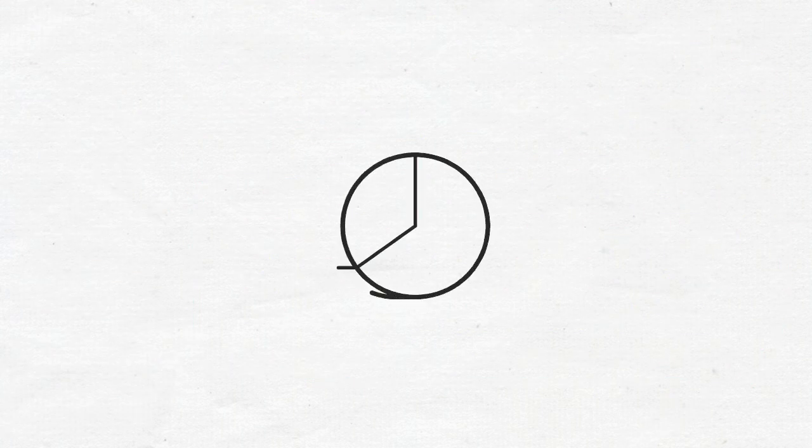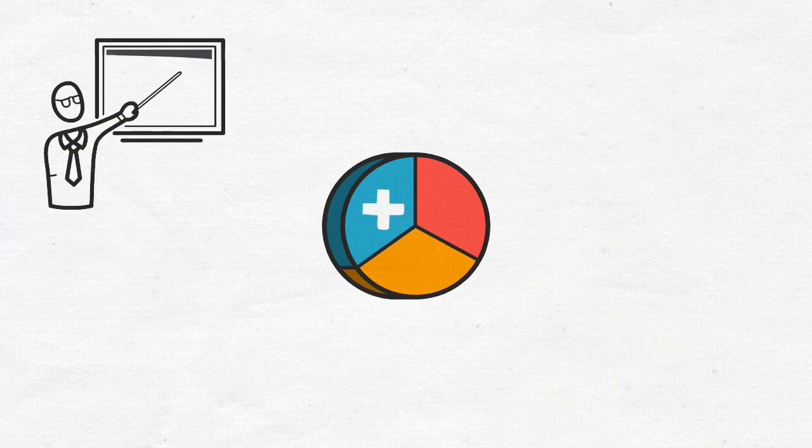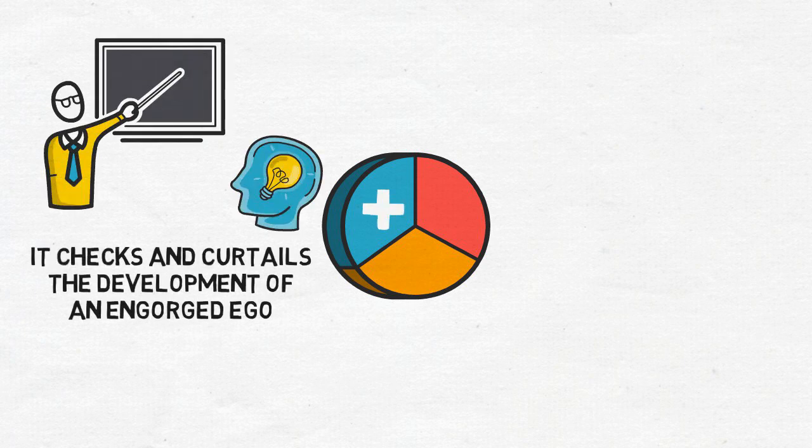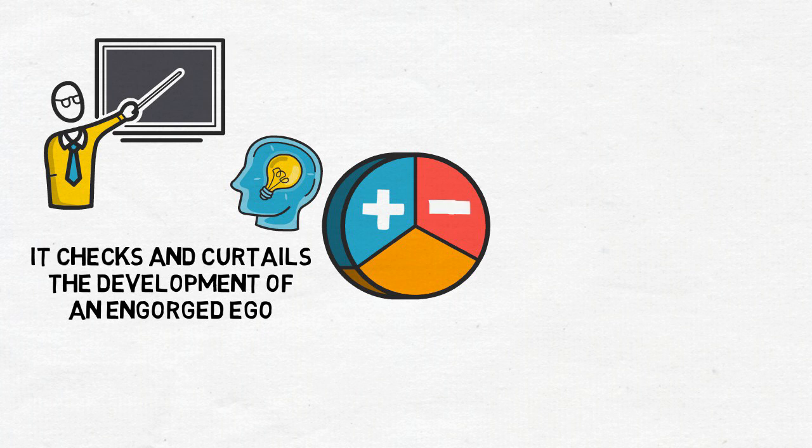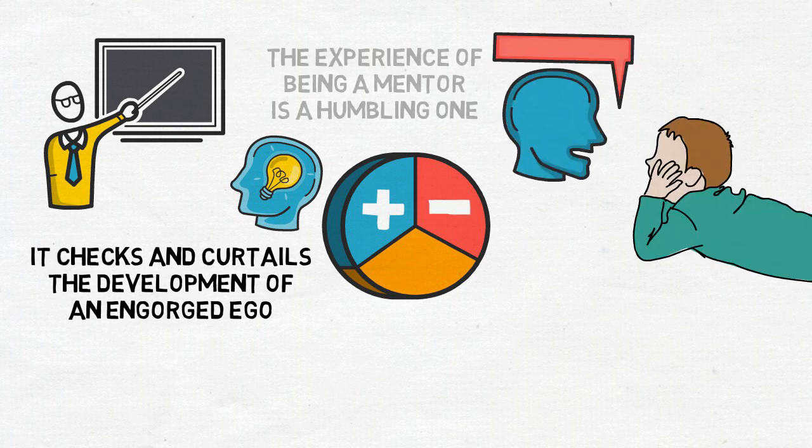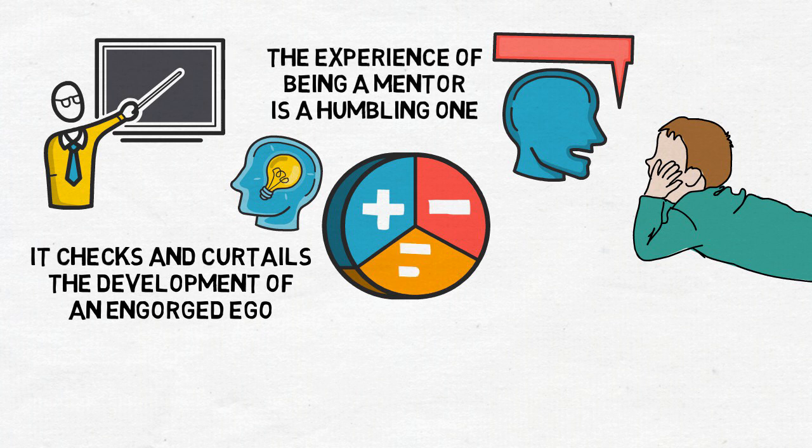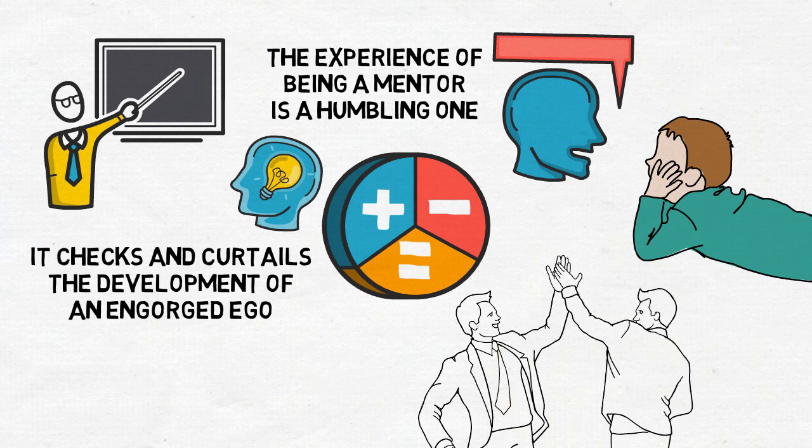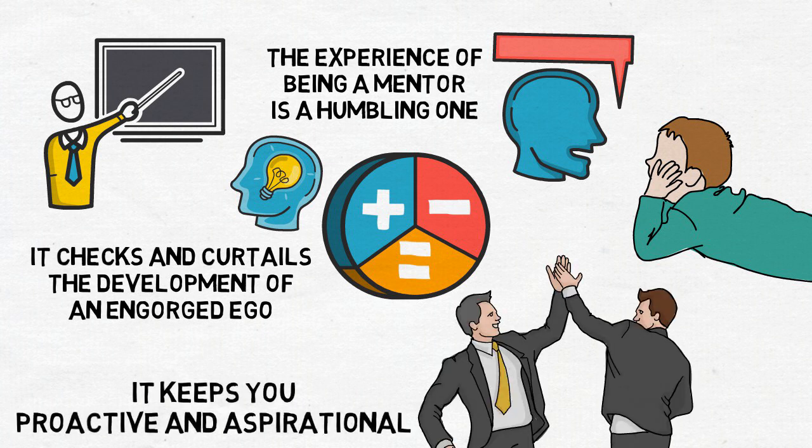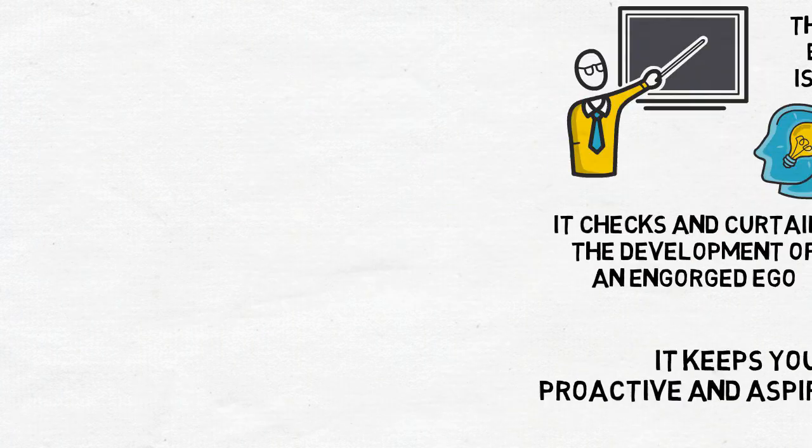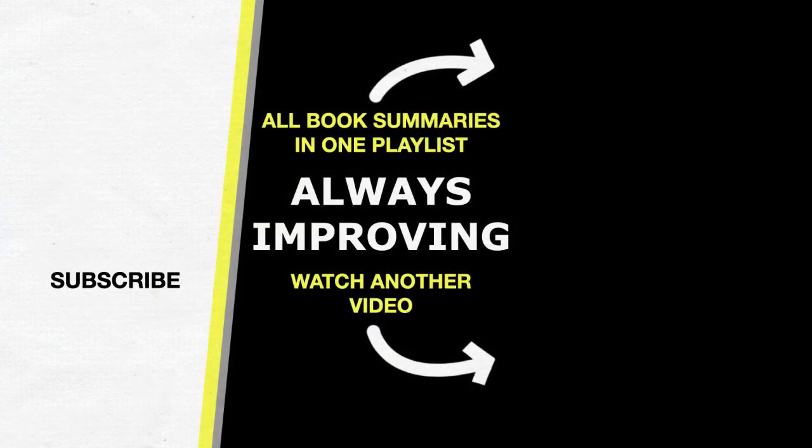The author notes that the efficiency of this philosophy comes from the modalities through which it works. First, when you learn from someone who is better, it checks and curtails the development of an engorged ego. Secondly, when you teach someone, the experience of being a mentor is a humbling one that also checks the ego. And thirdly, when you train with or learn from someone whose skill is equal to yours, it keeps you proactive and aspirational, always learning and growing instead of becoming complacent.